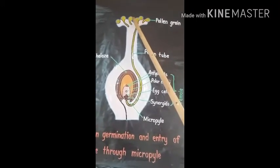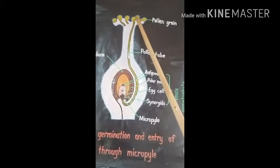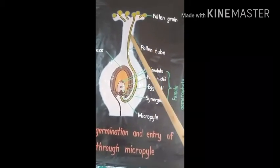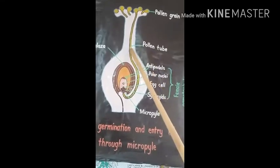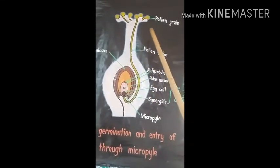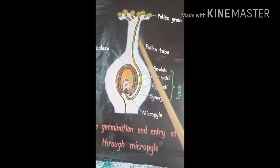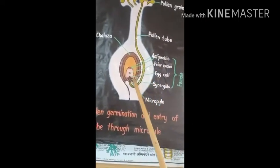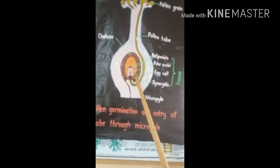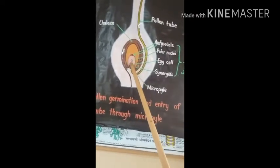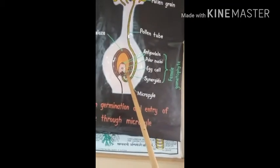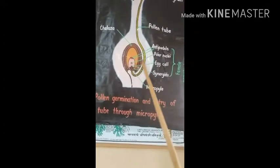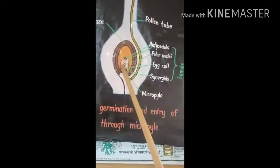This pollen grain starts germinating and it produces a tube, which is known as a pollen tube. Through this pollen tube, the pollen grain transfers its sex organ or chromosomes into the female sex gamete or female sex organ — the female gametophyte. Through this pollen tube, it enters into the female gametophyte.